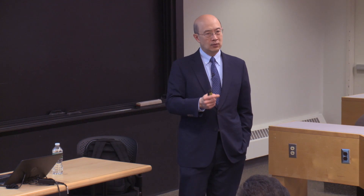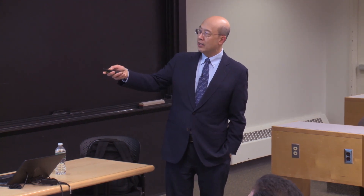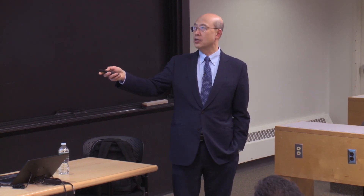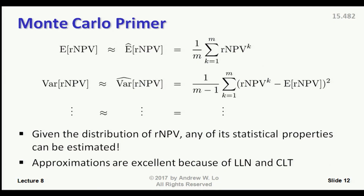How good an estimate is it? We'll get to that in a minute. The point is that when you calculate the average across your simulations, that average is meant to be an estimator of the theoretical expected NPV — just as when you calculate the average of anything, that average is meant to be an estimator of the population expectation. We can also estimate the variance of your risk-adjusted NPV by calculating the sample variance. These estimators are generally very good because the assumptions of statistical estimation — namely independent and identically distributed random variables — hold, since you're simulating IID random variables.